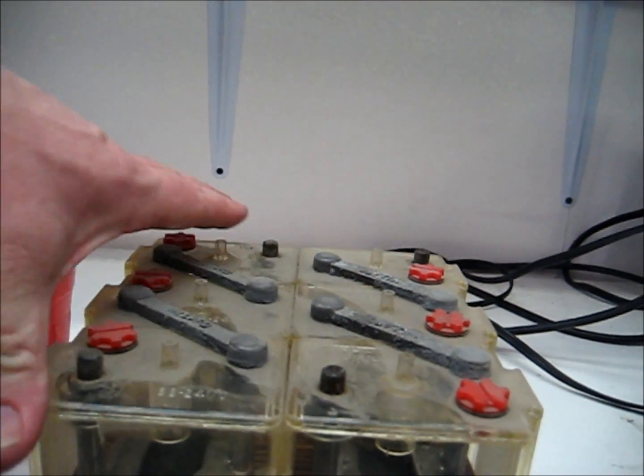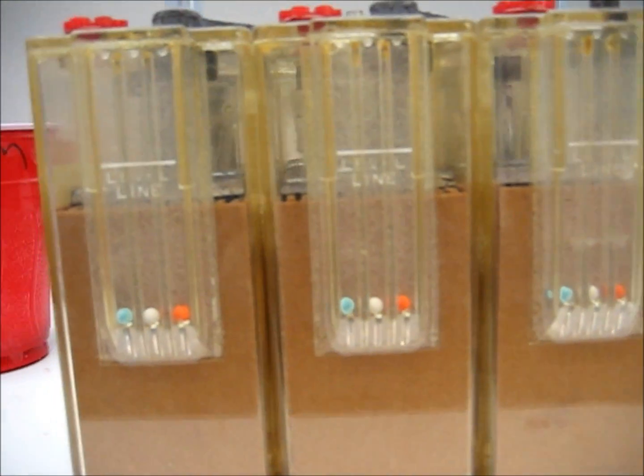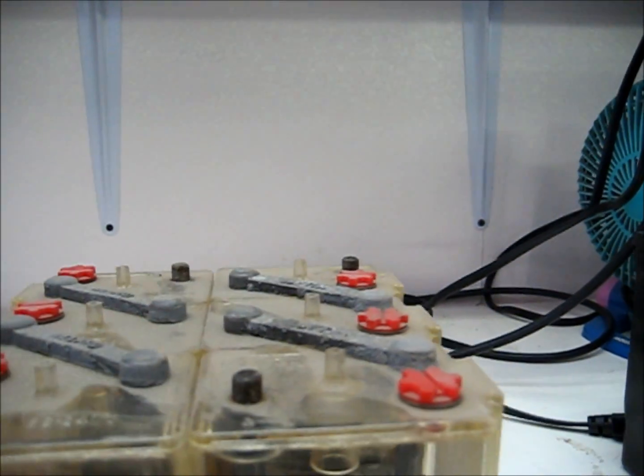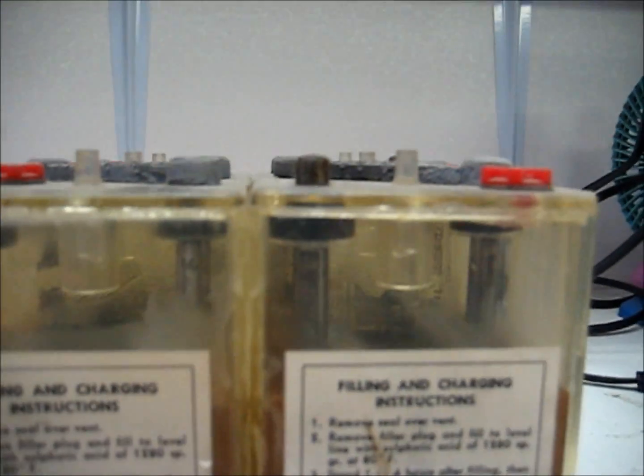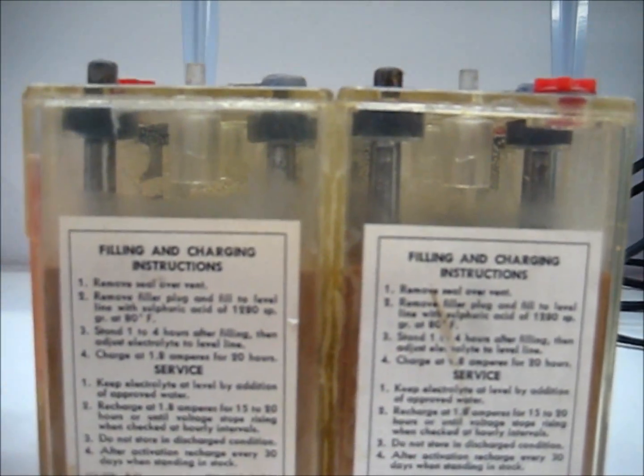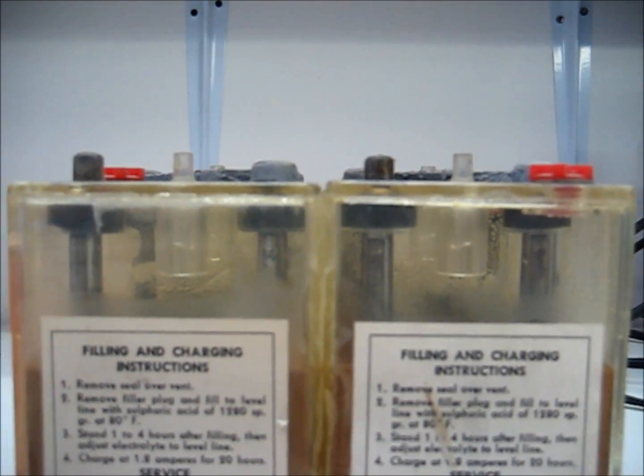So what we're gonna do with these guys - and see they come with their own hydrometers on each one - is we're gonna actually activate them, but we're gonna activate them with alum. So this will be a virgin lead acid from 1951, never been activated. And John has quite a few of these.